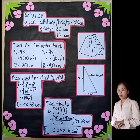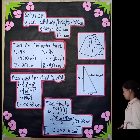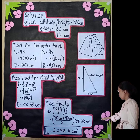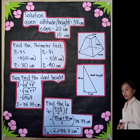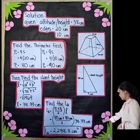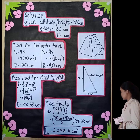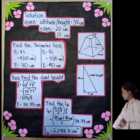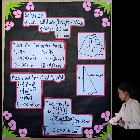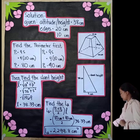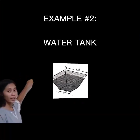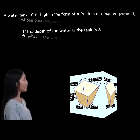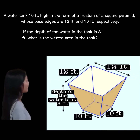Now we can find the lateral surface area using LA = (P1 + P2) / 2 × l. Substituting: LA = (80 cm + 40 cm) / 2 × 38.33 cm. The lateral area is 2299.8 cm².